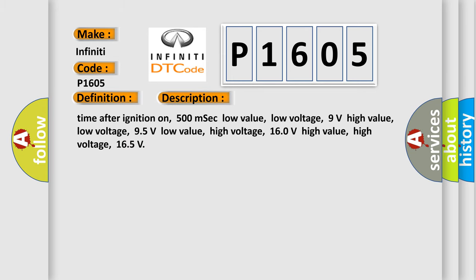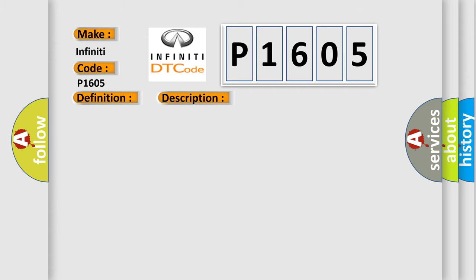Time after ignition on: 500 ms. Low value low voltage: 9 volts. High value low voltage: 9.5 volts. Low value high voltage: 16.0 volts. High value high voltage: 16.5 volts. This diagnostic error occurs most often in these cases: terminal resistor in ECM malfunction, damaged wiring or components — replace ECM.